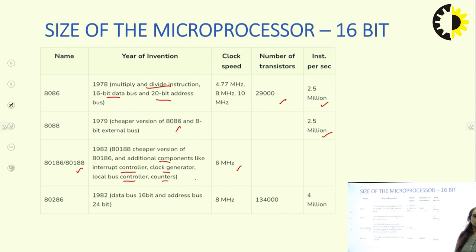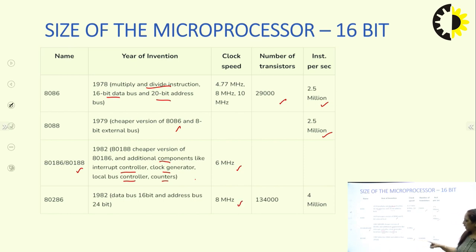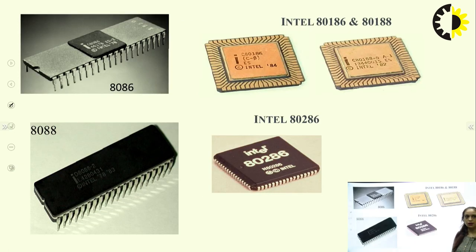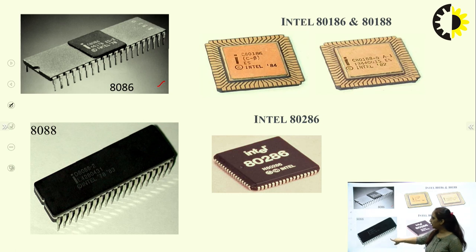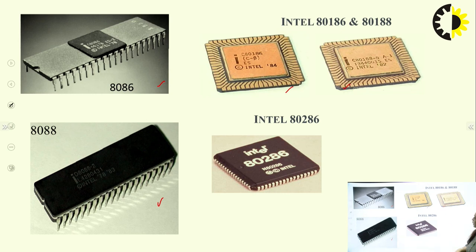The Intel 80286 microprocessor was invented in 1982. It has a 16-bit data bus and a 24-bit address bus. The clock speed is 8 megahertz, it has 134,000 transistors, and can process 4 million instructions per second. These ICs — 8086, 8088, 80186, and 80286 — will be covered in upcoming lectures.